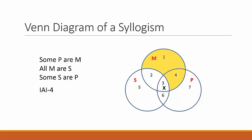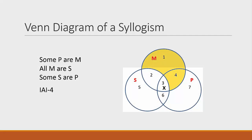Is this syllogism valid? Does the Venn diagram say some S are P? Yes — there is an X in area 3 indicating that there is at least one S that is also a P. The syllogism is valid.